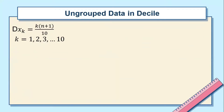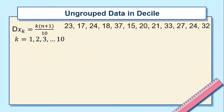Here is an example of ungrouped data in decile. Comparing the formula of decile and percentile, they have the same format and the same positioning of K and N, but check the divisor. The divisor of decile is 10, while in percentile it is 100.